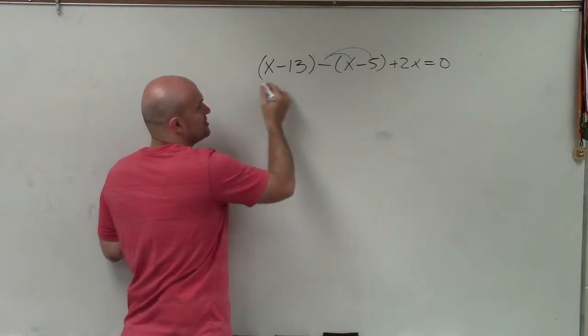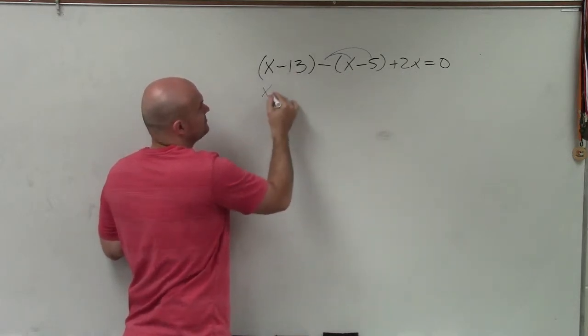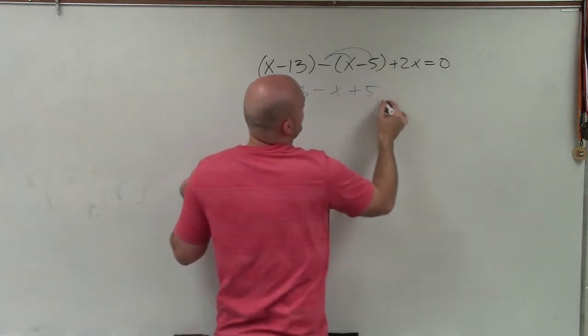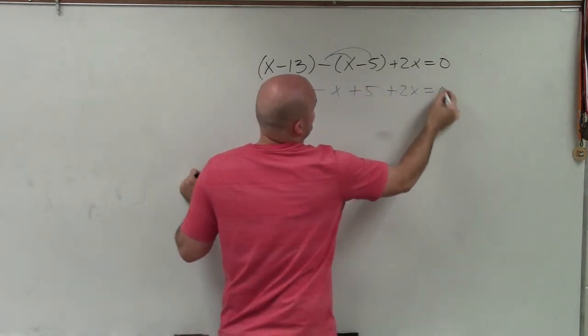So therefore, that's going to give me a new term. So now let's rewrite this without the parentheses and by applying this operation, which is: x-13-x+5+2x=0.